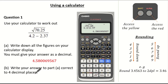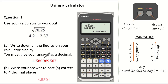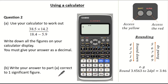Now the second part wants us to write our answer to part A correct to 4 decimal places. The fourth decimal place is a 0, and the digit to the right is a 6, so that means we round up. So my answer is 4.5801.